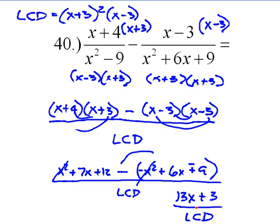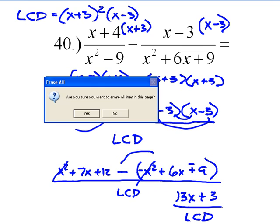So we have x squared minus x squared, 7x plus 6x is 13x, and 12 minus 9 is positive 3 over the LCD. Sorry if I confused you on that, but I think redoing it a little bit helps us out.